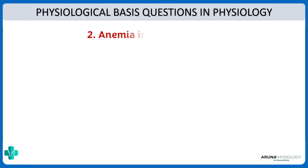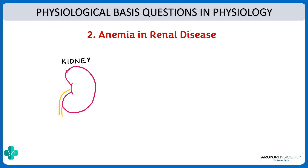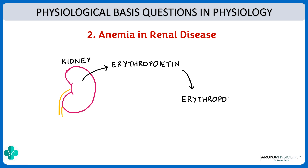Next: why is there anemia in renal disease? We know that erythropoietin — a very important hormone responsible for the formation of RBCs — is produced by the kidney. Erythropoietin stimulates erythropoiesis, meaning this hormone helps in the production of RBCs.